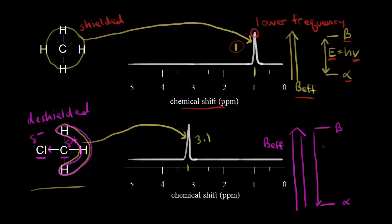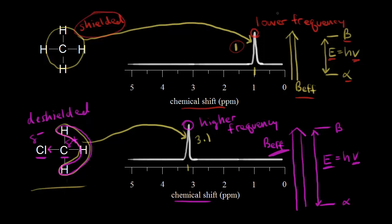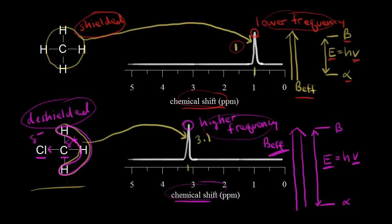Since we have a deshielded proton, we have a greater difference in energy between our spin states, and energy corresponds to frequency. A greater effective magnetic field means a greater energy difference, which means a larger frequency — a higher frequency absorbed. This would be a higher frequency compared to the previous example. A higher frequency signal compared to the protons in methane means we get a higher value for the chemical shift. To sum up: shielded protons give a lower frequency signal and therefore a lower chemical shift, while a deshielded proton gives a higher frequency signal and a higher chemical shift. That's what electronegativity does — an electronegative atom deshields the protons, giving a higher chemical shift.